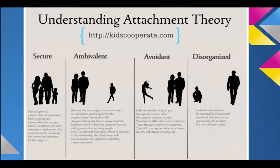Avoidant attachment shows little emotional sharing and play, few signs of emotion when the caregiver leaves or returns, and low affection when offered affection. These children often treat strangers similarly to caregivers. Disorganized attachment, added later, is characterized by a confused response to the caregiver's return — sometimes secure, sometimes ambivalent, wanting to be comforted but walking backwards into a care situation. They don't have an inner working model to help dictate their behavior.